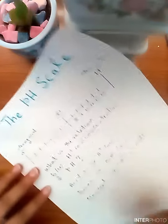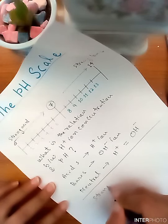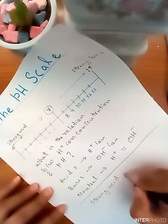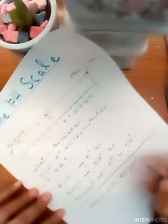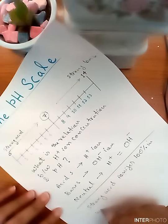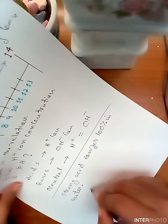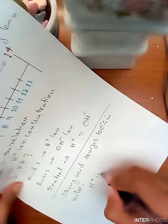So, we all know that strong acid ionizes completely or 100% in water. It means a strong acid will produce maximum H-positive ions.